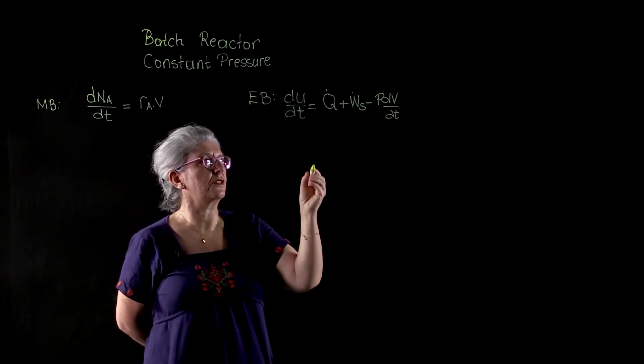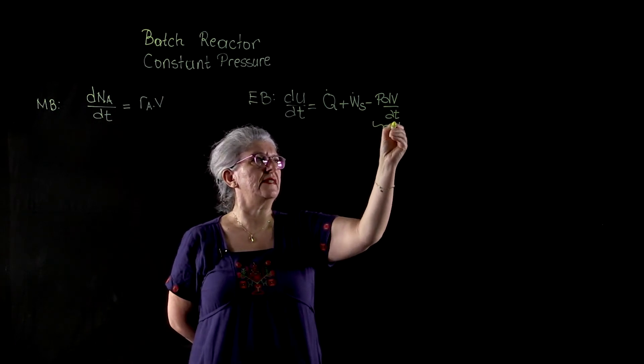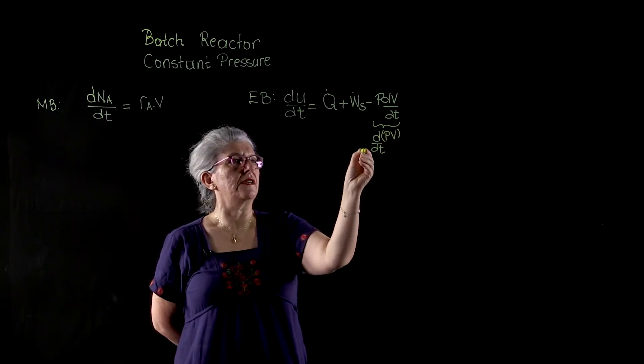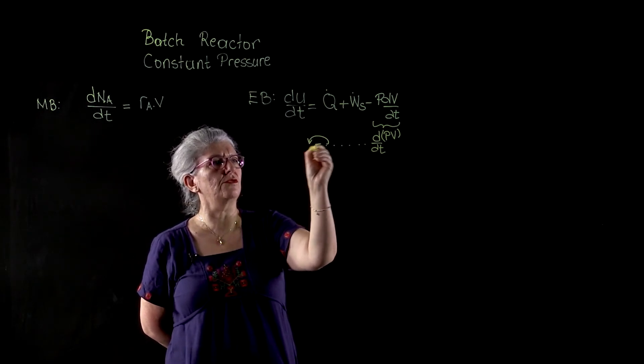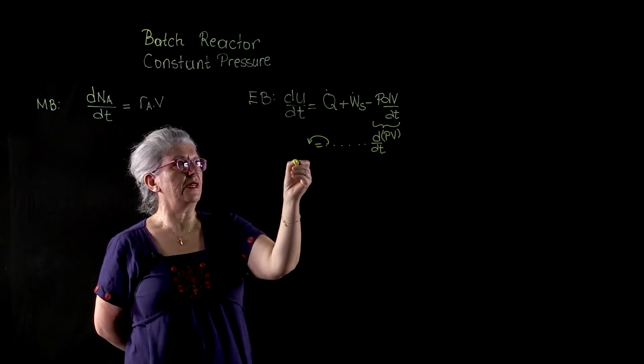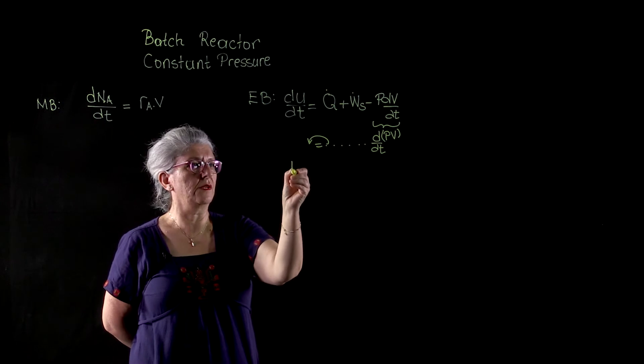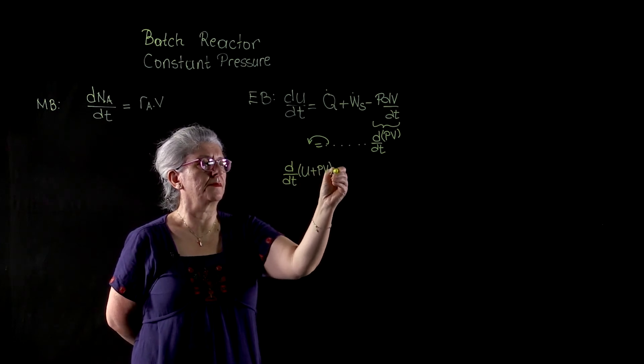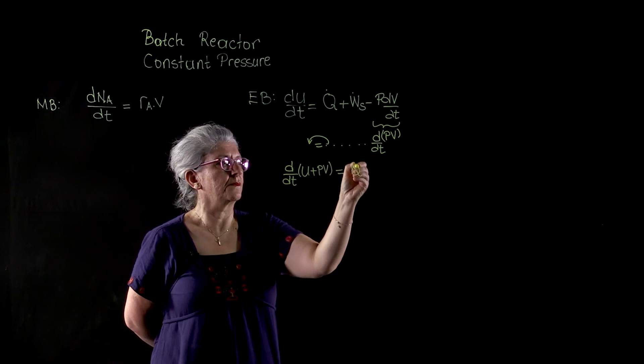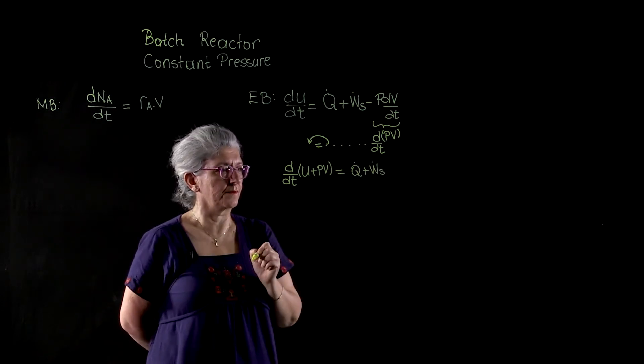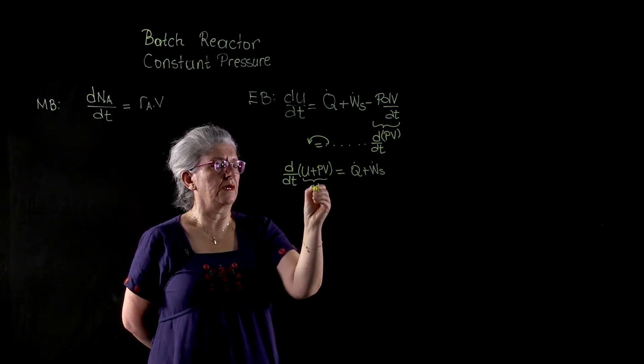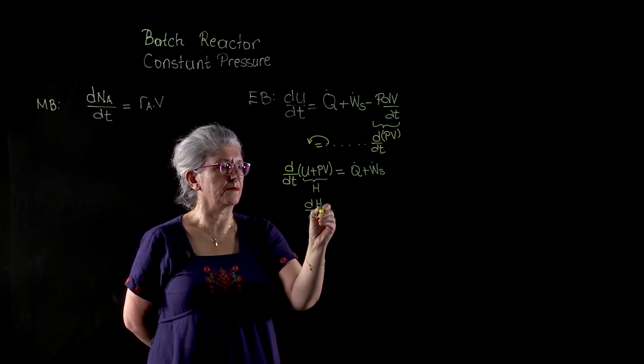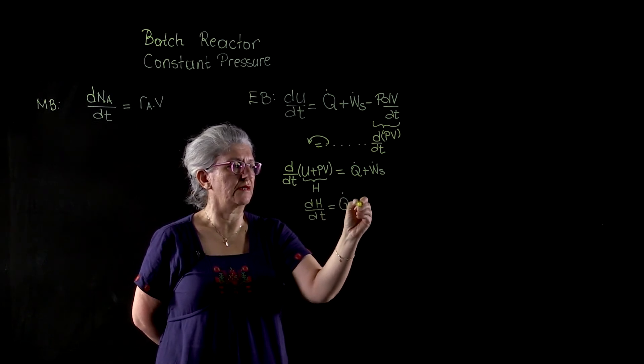Under constant pressure conditions, we can write this as d(PV)/dt. We can transfer it to the left side of the equation and bring it with the internal energy term to obtain U plus PV, that is equal to Q plus shaft work. This term is called the enthalpy. dH/dt is equal to Q plus shaft work.